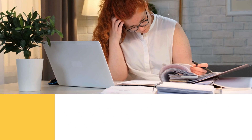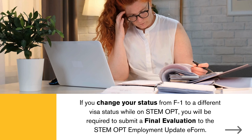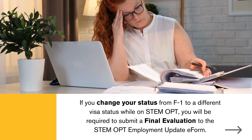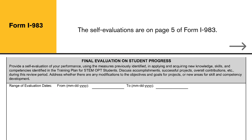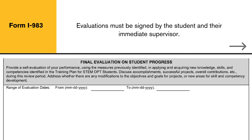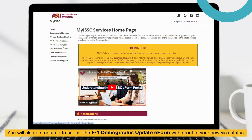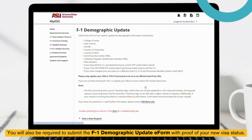Change immigration status: if you change your status from F-1 to a different visa status while on STEM OPT, you will be required to submit a final evaluation to the STEM OPT Employment Update e-form. The self-evaluations are on page 5 of Form I-983, and for the final evaluation you must fill out the bottom section of page 5. Evaluations must be signed by the student and the immediate supervisor. You will also be required to submit the F-1 demographic update e-form with proof of your new visa status.